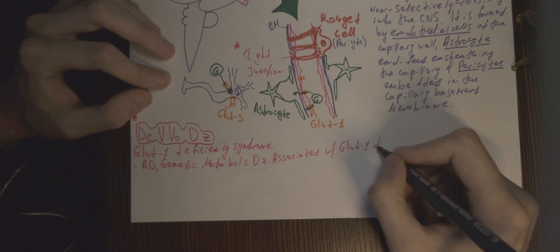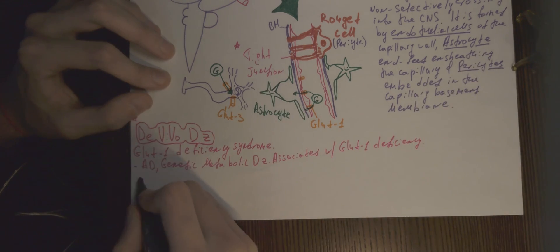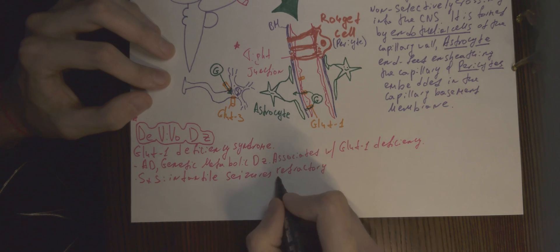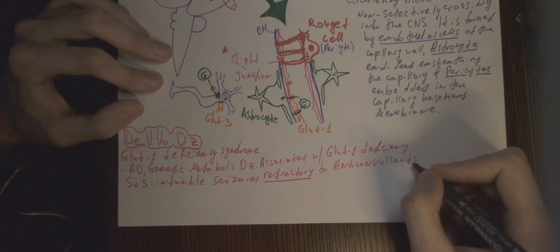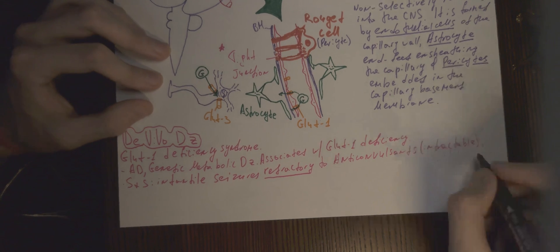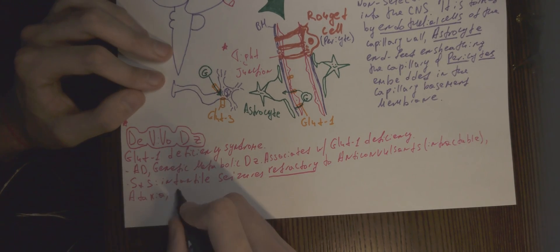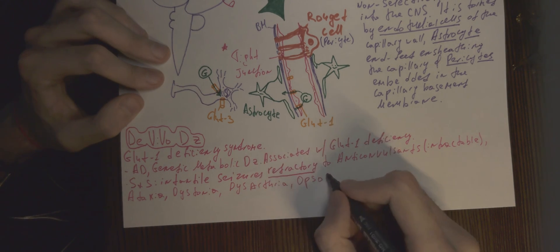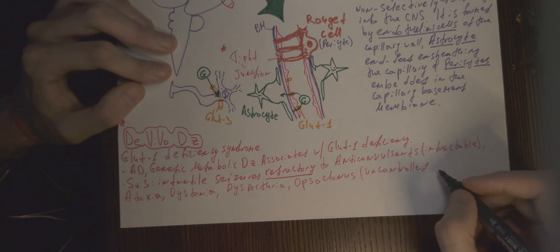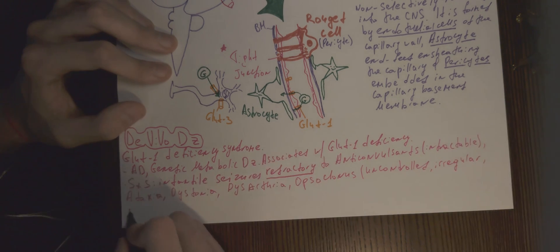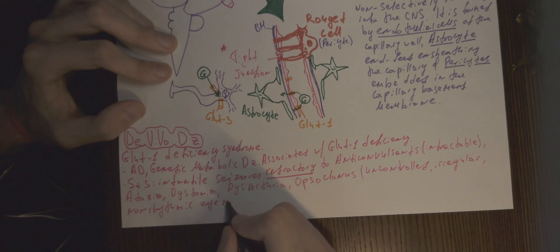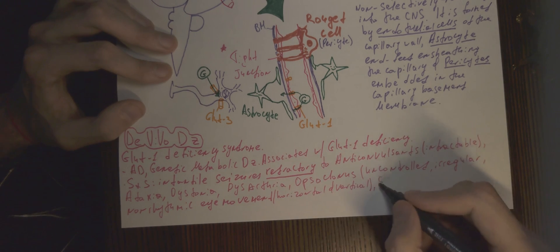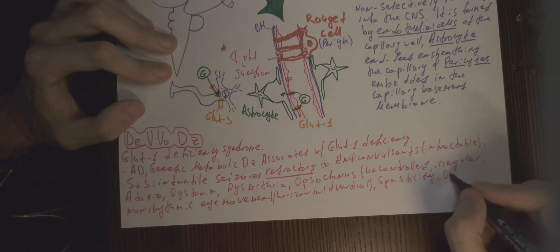Signs and symptoms include infantile seizures refractory to anticonvulsants, ataxia, dystonia, dysarthria, opsoclonus (which is uncontrolled, irregular, non-rhythmic eye movement, both horizontal and vertical), spasticity, deceleration of head growth, and microcephaly. The defect is located on chromosome number 1 at SLC2A1 gene.